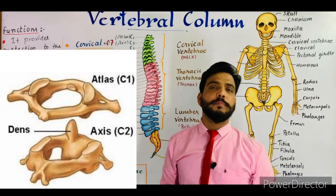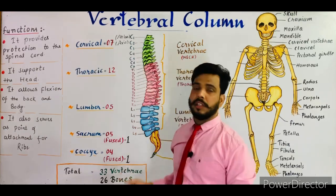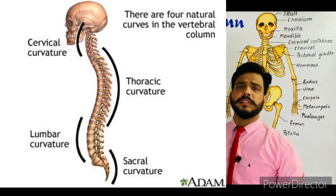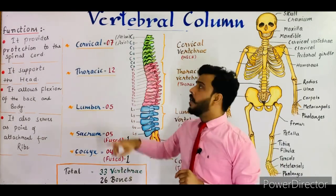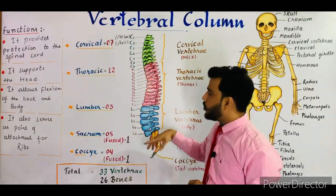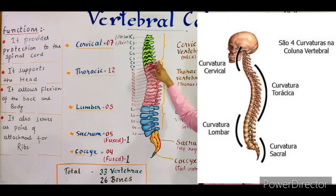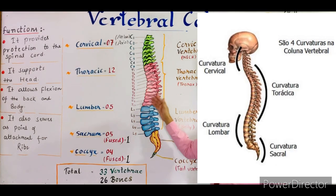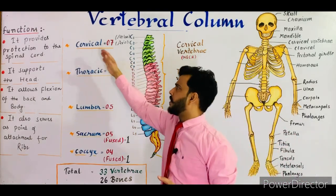The curve present in the cervical region is known as the cervical curvature. As you can see, the vertebral column is not straight — it is slightly S-shaped, and due to this S-shape there are several curves. The curve in the thoracic region is known as the thoracic curvature, and the curve in the lumbar region is known as the lumbar curvature. These are the curvatures present in the vertebral column.